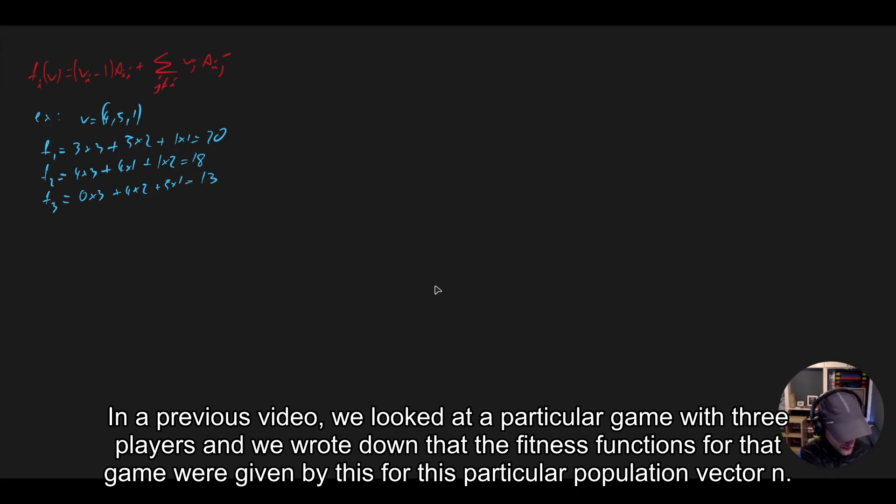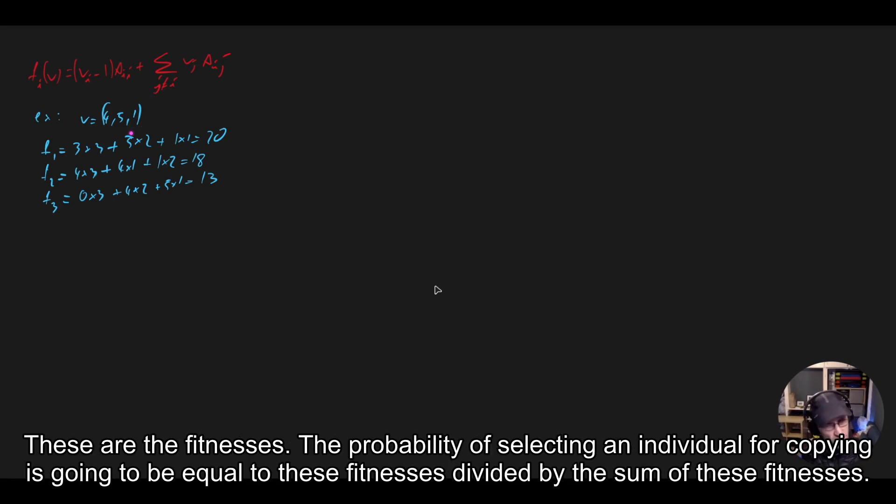In a previous video, we looked at a particular game with three players, and we wrote down that the fitness functions for that game were given by this for this particular population vector n. These are the fitnesses.